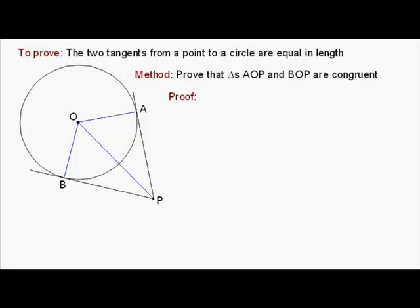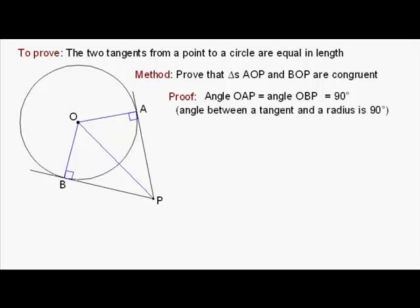Well, here's the proof. First of all, the angle OAP, that's this one, and the angle OBP are equal to each other because they're both equal to 90 degrees. Why? Well, there is a rule which says that's the case, and it's a rule that you should know. The angle between a tangent and a radius is 90 degrees.